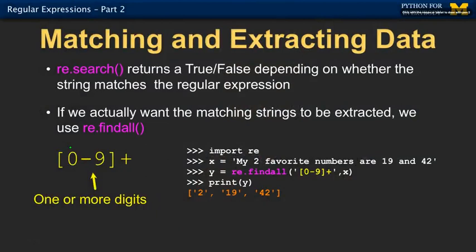We're going to start by looking at a new regular expression: the square bracket. The square bracket is kind of weird in that it describes one character — specifically, what we mean by a single character inside the brackets. We can have a range or a list, like A-E-I-O-U for vowels. Zero through nine is digits, so bracket zero dash nine bracket is a single digit. Add a plus and that means one or more digits.